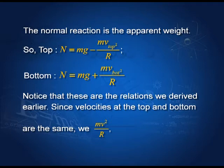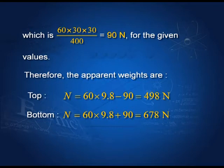Substituting the values — velocity 30 m/s, mass 60 kg, radius 400 m — the apparent weight at the top is 60 × 9.8 − 90 = 498 newtons, and at the bottom it is 60 × 9.8 + 90 = 678 newtons. So the person feels lighter at the top of the hill and heavier at the bottom of the hill.